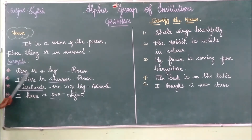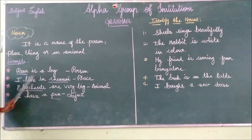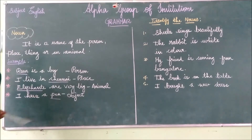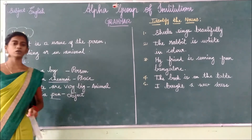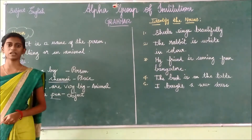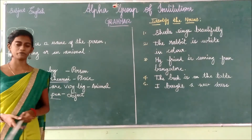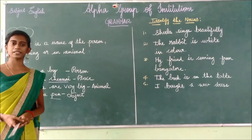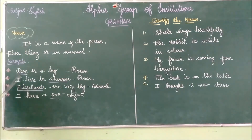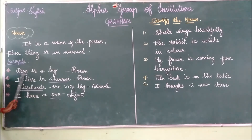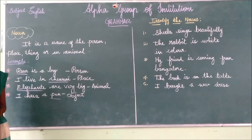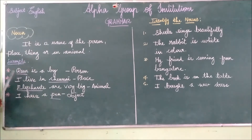The example of noun is: Ram is a boy. In this sentence, what is noun? We have already seen the definition — noun is the name, a specific name of a person, place, thing or an animal. In this sentence, look at the first word: Ram. What does it indicate? Is it indicating a person? Very good. Ram indicates the person, so it is the noun.